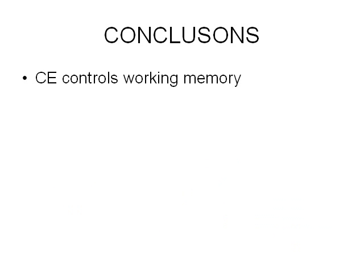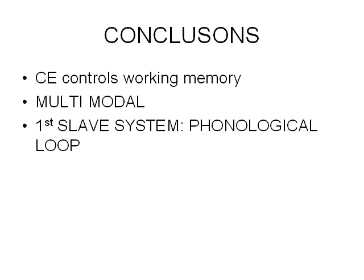Here we have the conclusions of the study. The central executive controls your working memory; it's operating in the background all the time. It's a multi-modal memory system — this means it's not tied down to any one of the five senses; it can deal with sound or vision or touch or taste or smell, or all of them at once. The first slave system is the phonological loop, which is the slave system that deals with sound. It uses acoustic encoding and Baddeley and Hitch refer to it as the inner ear.